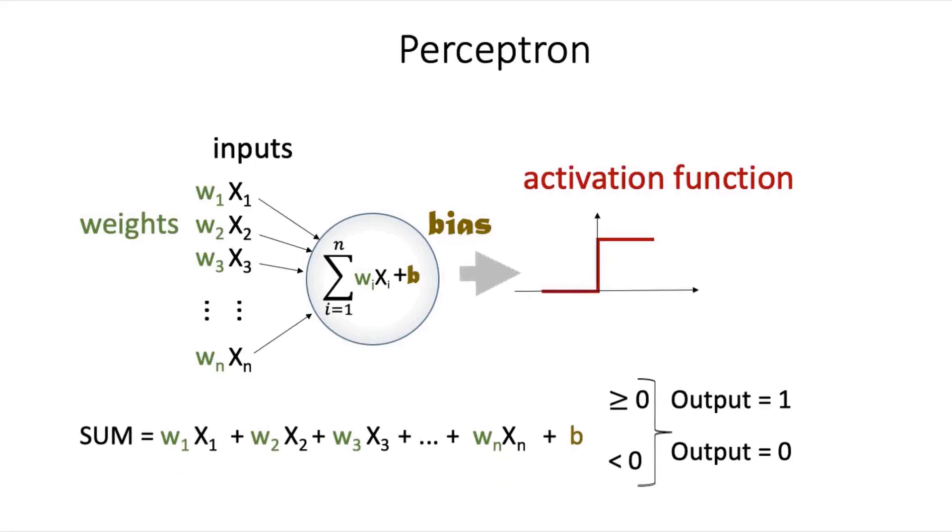The activation function basically squashes the sum before outputting it from the neuron. When we move on to networks of many neurons, this activation function is what allows for non-linear representations.